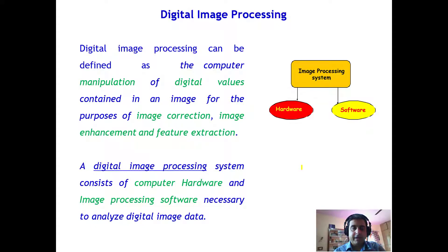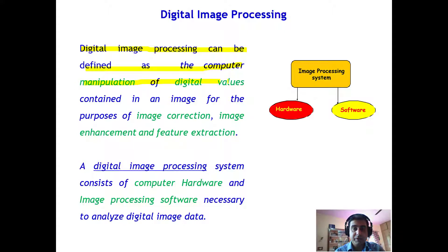Welcome back. Now we will try to understand about digital image processing. As you know, a digital image or a satellite image is made up of digital numbers or digital values. So going by the definition, digital image processing can be defined as the computer manipulation of those digital values contained in an image.